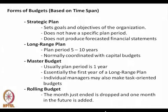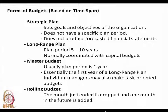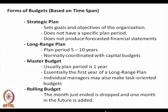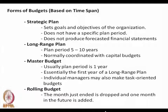Before we do that, we suggest that there can be different forms of budgets depending on the planning horizon or time span. A strategic plan does not have a specific plan period; it sets long-term goals and short-term objectives and may not be associated with any financial statements. A long-range plan, on the other hand, is usually made for a period of 5 to 10 years and is normally coordinated with capital budgets, where large sums of money will be invested for improving operations.